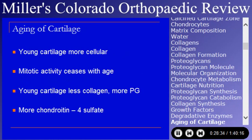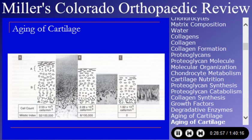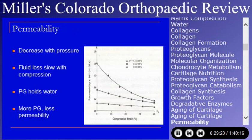Cartilage ages unfortunately. Young cartilage is more cellular; mitotic activity decreases or ceases with advancing age. Young cartilage has less collagen, more proteoglycan, and more chondroitin-4-sulfate. As one ages, the amount of proteoglycan markedly diminishes and cell activity ceases. Cartilage is permeable — it loses fluid with compression. The more proteoglycan a person has, the less permeable their cartilage is. In osteoarthritis there's proteoglycan loss and water increase, making it more permeable.